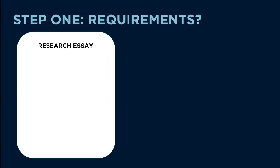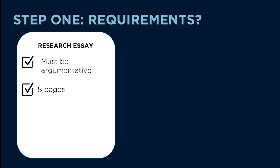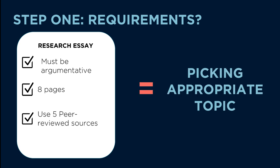When choosing a research topic, the best first step is to understand your assignment's requirements. Are there things you can or cannot research? How long is the paper? Are you required to find scholarly sources? This will help you choose an appropriate topic.